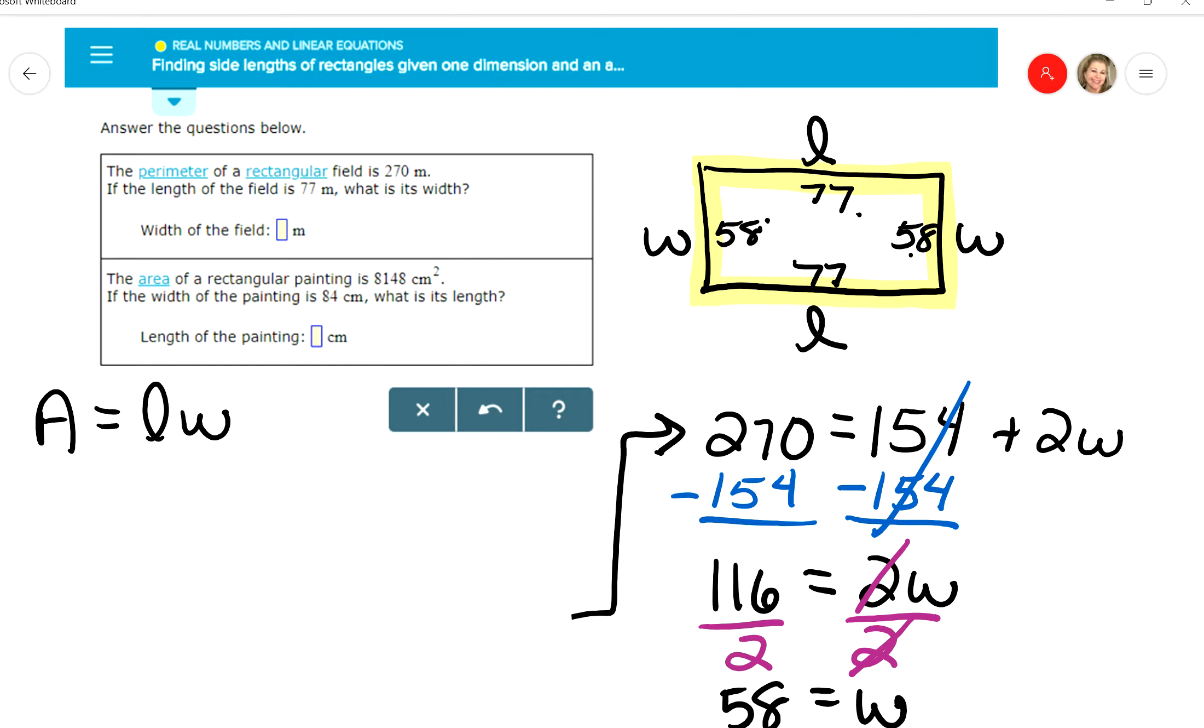They told me that the area is that big old number, 8148 equals length times width. This time I don't know the length, that's what they're asking me to find, but they tell me that the width is 84, so I'll put 84 here.